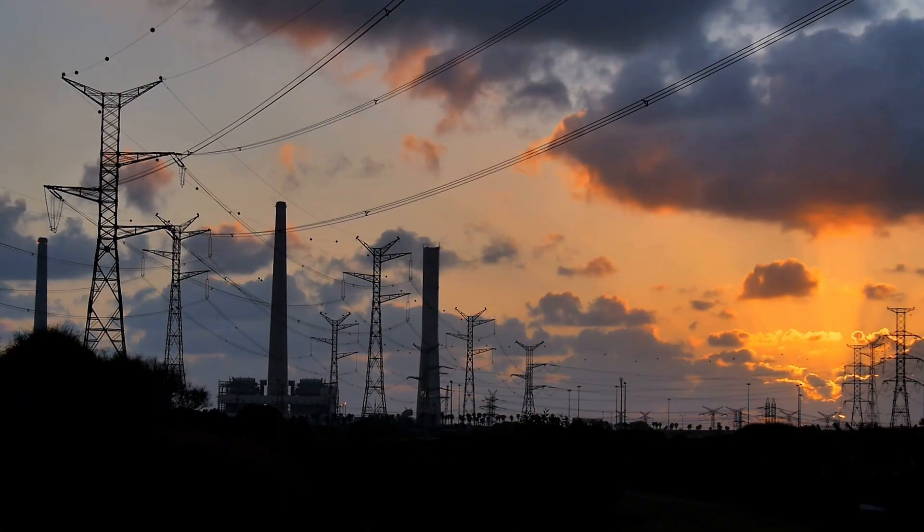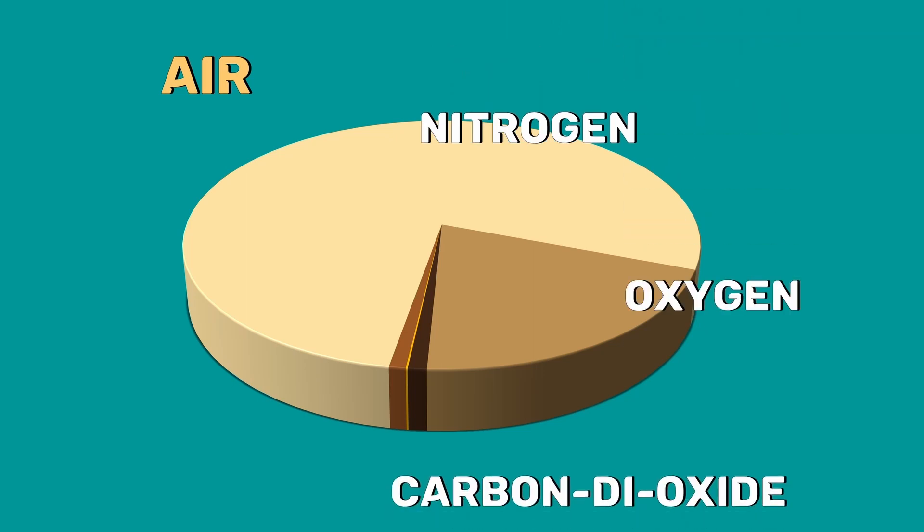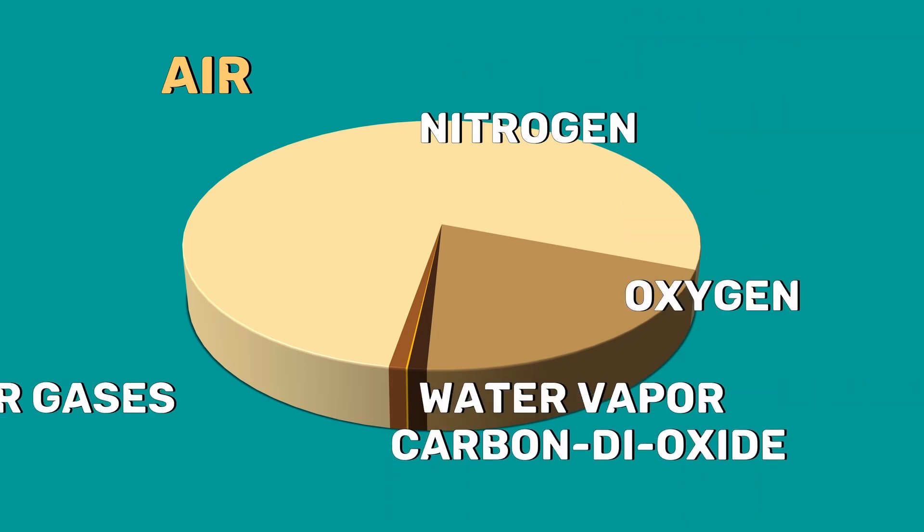The overhead power lines are not wrapped with insulating materials. Here, the air acts as an insulating medium. Air is a mixture of gases including nitrogen, oxygen, carbon dioxide, water vapour and other gases.